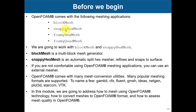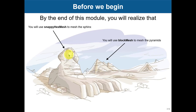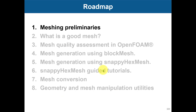OpenFOAM also provides a meshing library that allows you to convert meshes from other formats, so if you don't want to use the built-in tools you can use external tools with no problem. By the end of this module, you'll realize you'll use snappyHexMesh for tricky geometries and BlockMesh for very simple ones like cubes or pyramids. For difficult or industrial geometries, snappyHexMesh is the way to go.